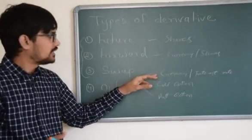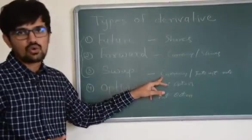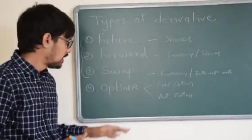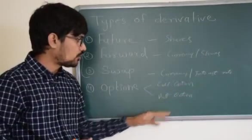In both the examples, I can use forward or principal currency swap to hedge my position. Then let's come to options. Options are of two types: call option and put option.